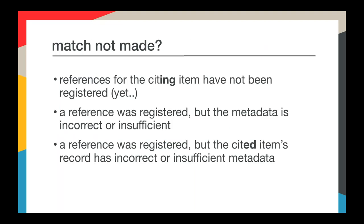We're often asked why the CrossRef cited-by count differs from the number identified by Google Scholar or Thomson Reuters. The reason is fairly simple: we only match among CrossRef members who have registered references, so it's a smaller pool — but it's very dependable. You can trust these matches within the CrossRef community.